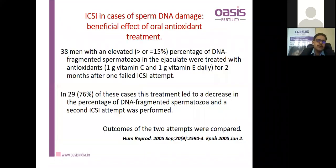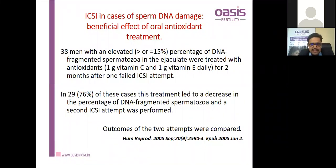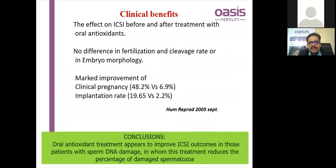ROS is also implicated in entities such as endometriosis, hydrosalpinges, PCOS, and unexplained infertility. Most studies have proven ROS can damage sperms and interfere with fertility by natural conception and ICSI. Oral antioxidant therapy — 1g vitamin C and vitamin E daily — was given, and outcomes improved. Oral antioxidant therapy is the recommended therapy for male factor due to ROS, improving ICSI outcomes in patients with sperm DNA damage by reducing the percentage of damaged spermatozoa. A proper adjuvant therapy is necessary to prevent implantation failure.